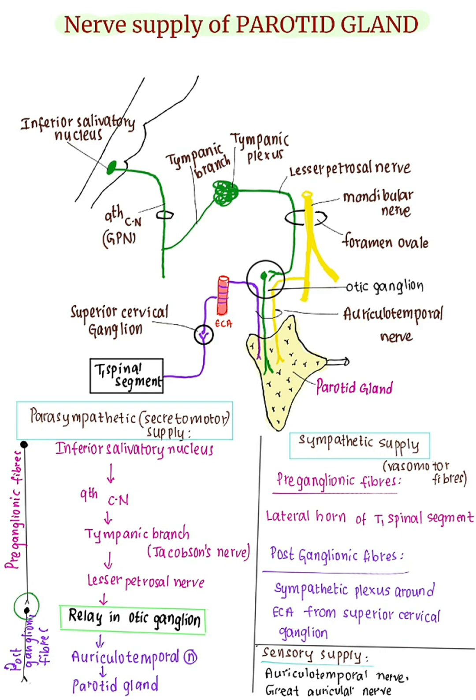Sympathetic supply: These are vasomotor fibers. The preganglionic fibers arise from the lateral horn of the T1 spinal segment.